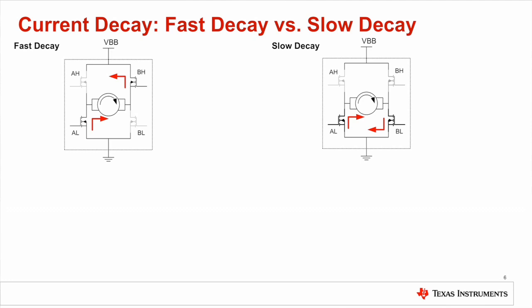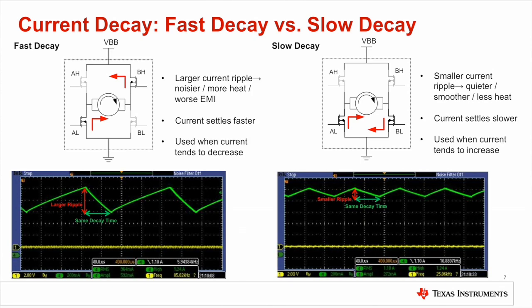The two alternative current paths have different decay rates. Current flowing against the full supply leads to a faster rate and is called fast decay. Current redirected through two resistive paths is called slow decay due to its slower rate. Here is a comparison between the two decay modes. Both figures show the same peak current and decay time, but fast decay has a larger current ripple because of a higher slew rate, which could lead to bigger noise, more heat, and worse EMI.